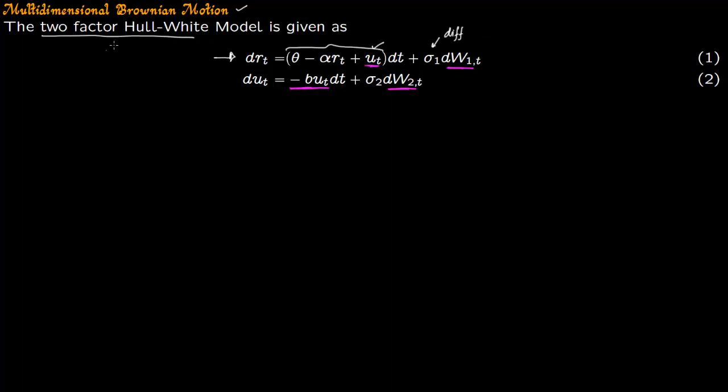So this is a multi-dimensional Brownian motion. You have a stochastic differential equation which enters into another stochastic differential equation. So you have to solve for u_t from here and then plug this u_t in here to simulate interest rate r_t.